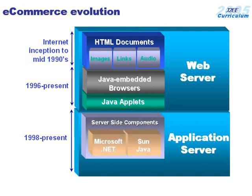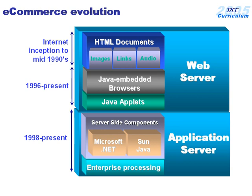With the application server, we had the ability to develop different types of server-side components — things that would actually run on the application server and generate content back to the web browser. There were two different implementations: Microsoft's implementation of their business logic components, and Sun's Java-based variation. Each of these utilized their inherent programming aspects along with enterprise processing to link Java-based and .NET components to legacy system applications running in the background, such as client-server applications or mainframe components.